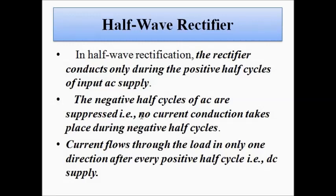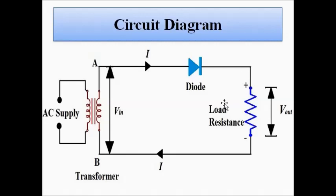The negative half cycles are suppressed or attenuated. As a result, the current flows through the load resistance — across which the output is taken — in one direction only. Whenever there is current flow only in a single direction, it means that the output voltage is DC. DC means current will always flow in a single direction; if it travels in both directions alternately it is AC. Since the current flows only in one direction here, it is DC.